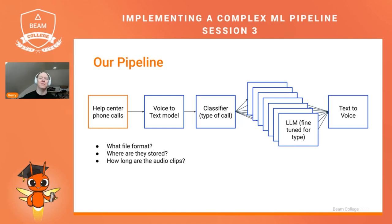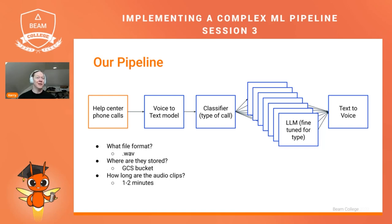These are some questions we'll need to ask for the different steps. For the input: what is the file format? Where are those files stored? And since it's audio, we need to know how long the audio clips can be, because that could influence our choice of model. For our pipeline, the file format will be WAV files, stored in a Google Cloud Storage bucket, with a length of one to two minutes per clip.